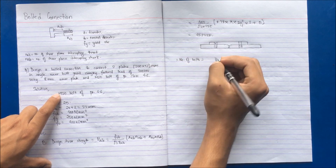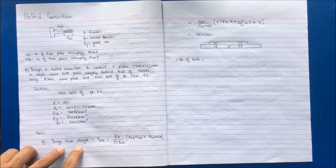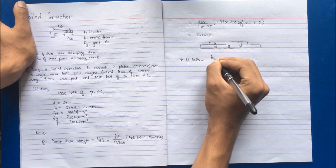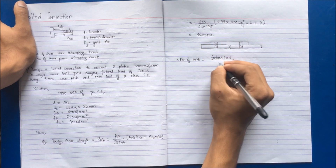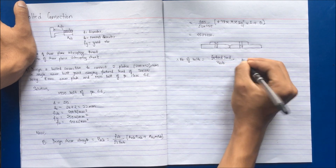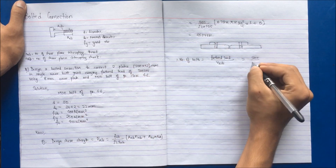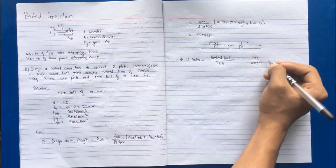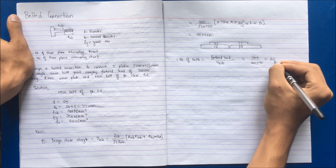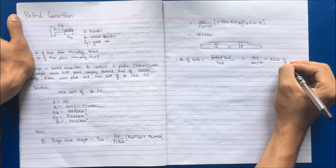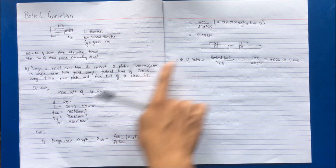Now the number of bolts has to be determined. It is given by dividing the factored load by the design shear strength, Vdsb. So: 300 kN / 45.27 kN = 6.626, which is rounded up to 7 — but we take 9 bolts on each plate. We must make sure this is the number on each plate.